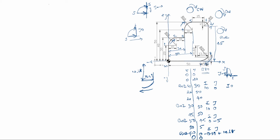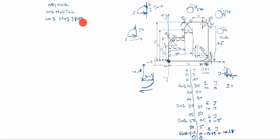We will start with N01: M012, clamping the workpiece. N02: M06, T02 — M06 is tool change, T02 is the tool number. N03: M03, S800 — M03 is spindle on, S800 is spindle speed. You can also use S1500 or S2000, but in this case I will use S800.